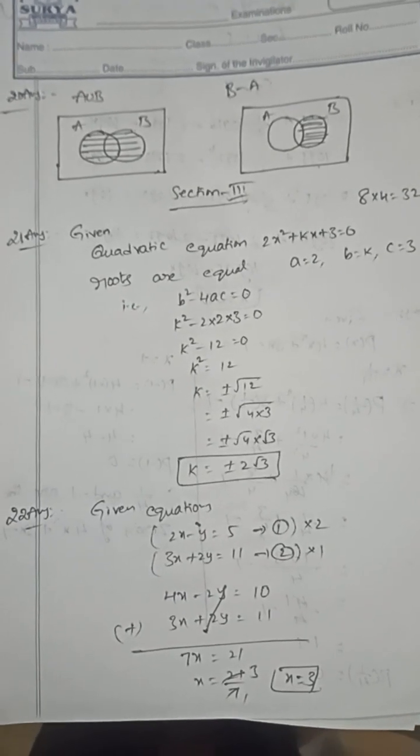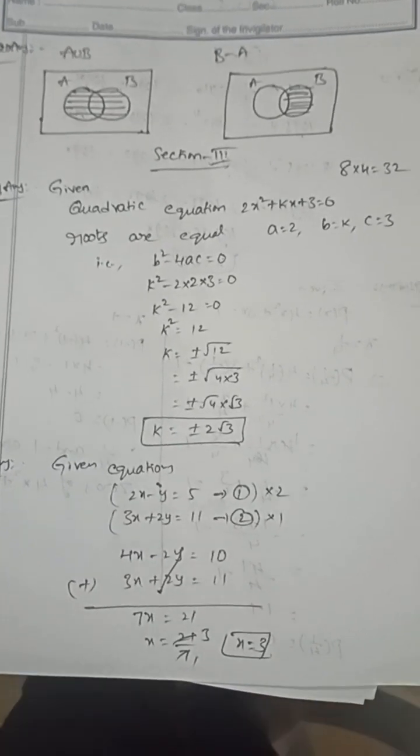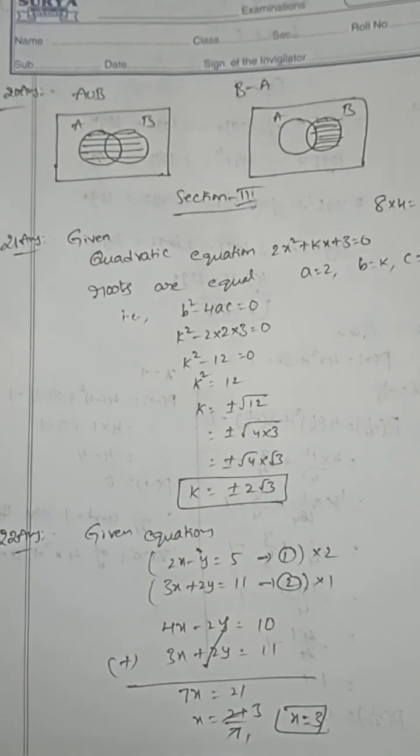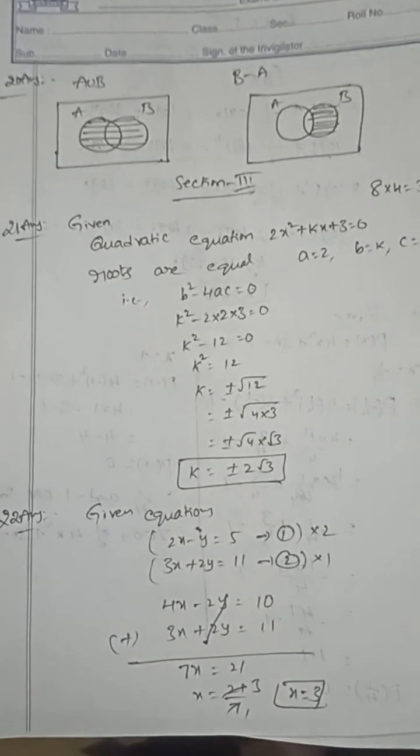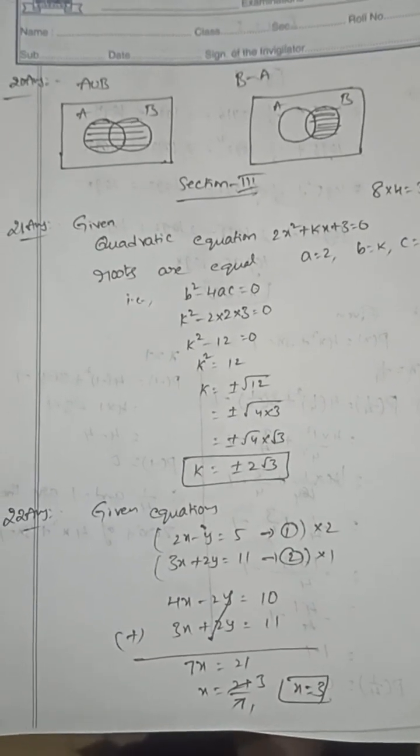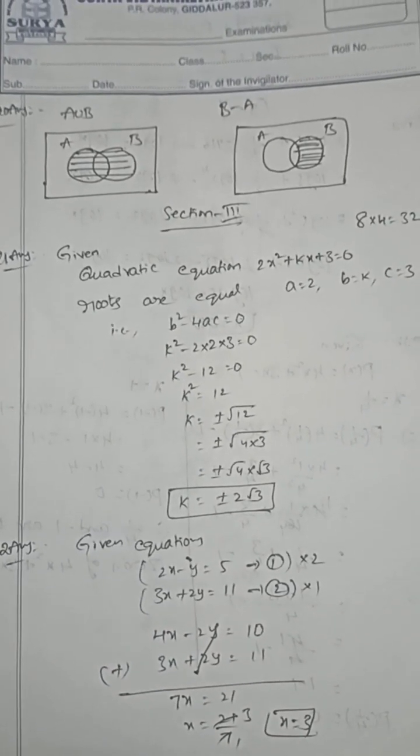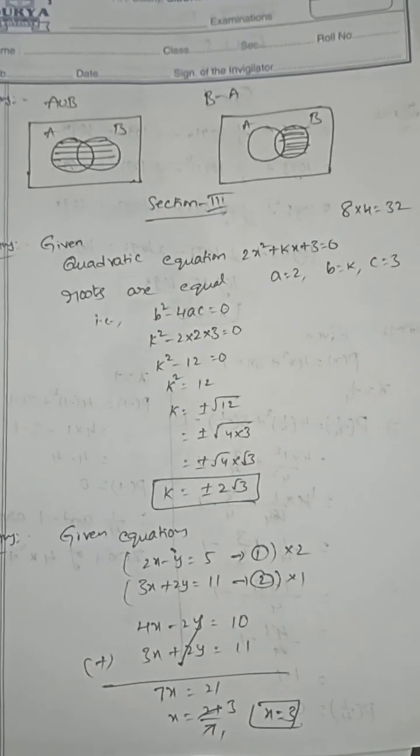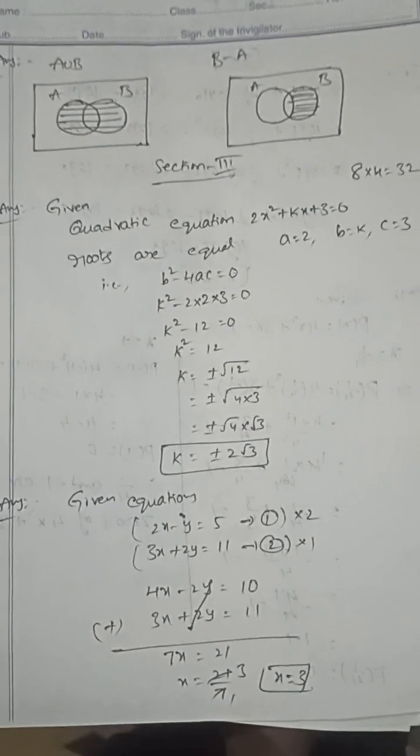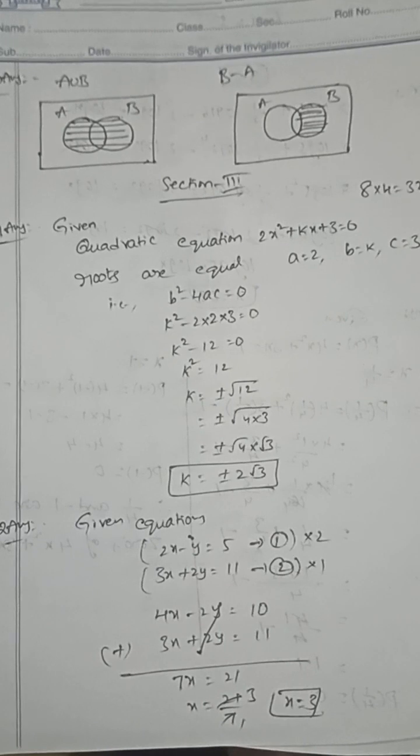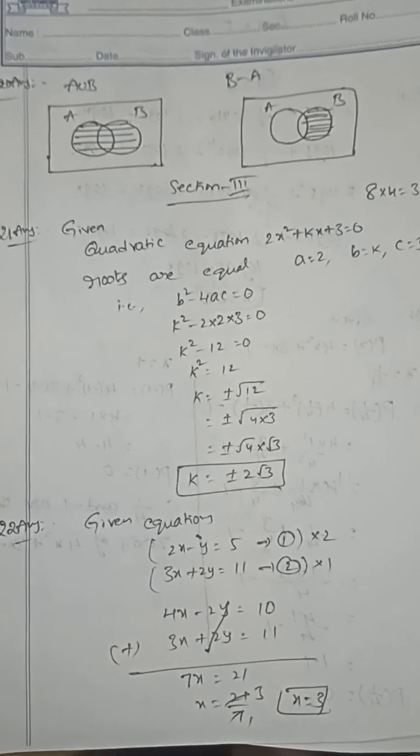The roots are equal, find the k value. When roots are equal, the discriminant is zero: b² - 4ac = 0. In this equation a=2, b=k, c=3. Comparing with the general form ax² + bx + c. Then k value is ±2√6.